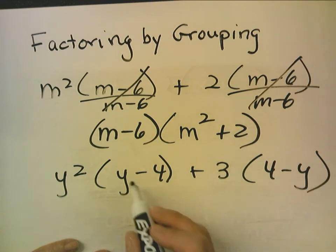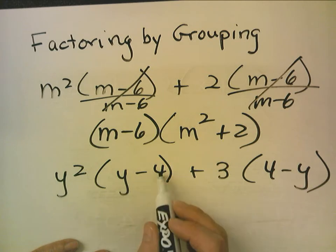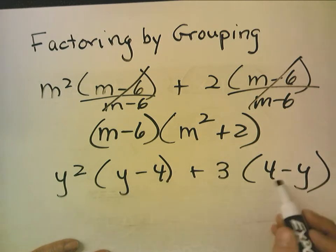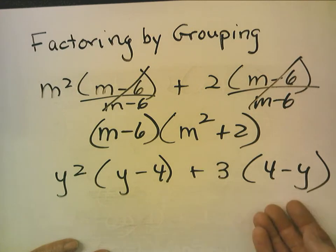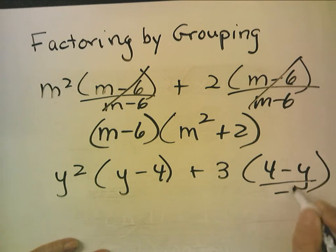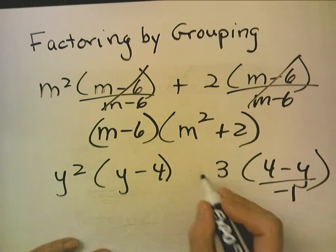Okay, well, when you notice that you have the exact same numbers or variables, but opposite signs for all of them, that means you can pull out a negative 1. And if I was to divide this by negative 1, so in other words, pull out a negative 1,